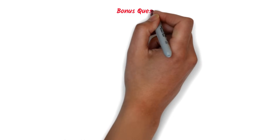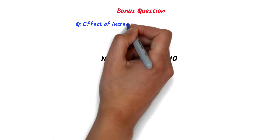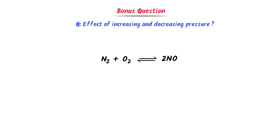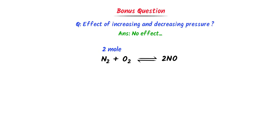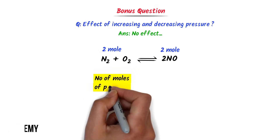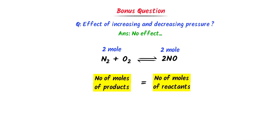Here, let me teach you one bonus question. Consider this reversible reaction. What will be the effect of increasing or decreasing pressure? The answer is simple: increasing or decreasing pressure has no effect on this chemical reaction because the number of moles of reactants is 2 and the number of moles of products is also 2. So note it down that if the number of moles of reactants is equal to the number of moles of products, changing pressure doesn't affect the chemical equilibrium.